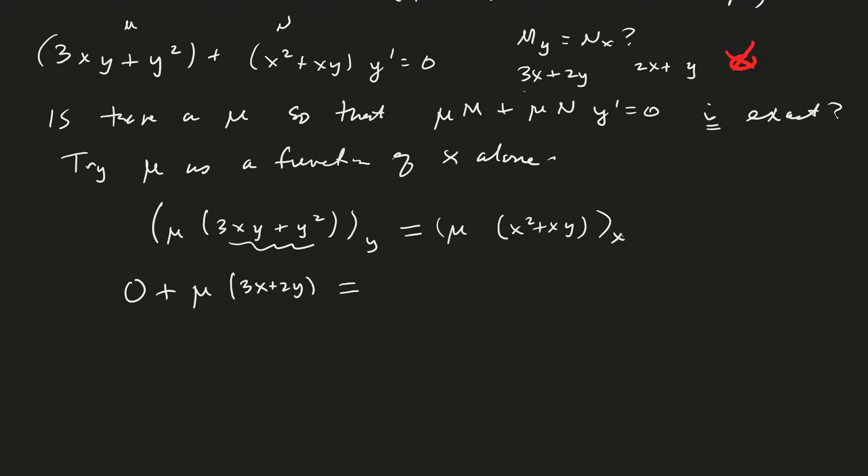Okay, so that's equal to mu sub x, which is d mu over dx times x squared plus xy plus mu times the derivative of that with respect to x, which we also computed was two x plus y. Good. Now bring this over to the other side, and do some subtraction, and we get that mu times, let's see, three x minus two x would leave us with an x. Two y minus y would leave us with a y. And on this side we have d mu over dx. Go ahead and factor out the x. So it's x times x plus y.